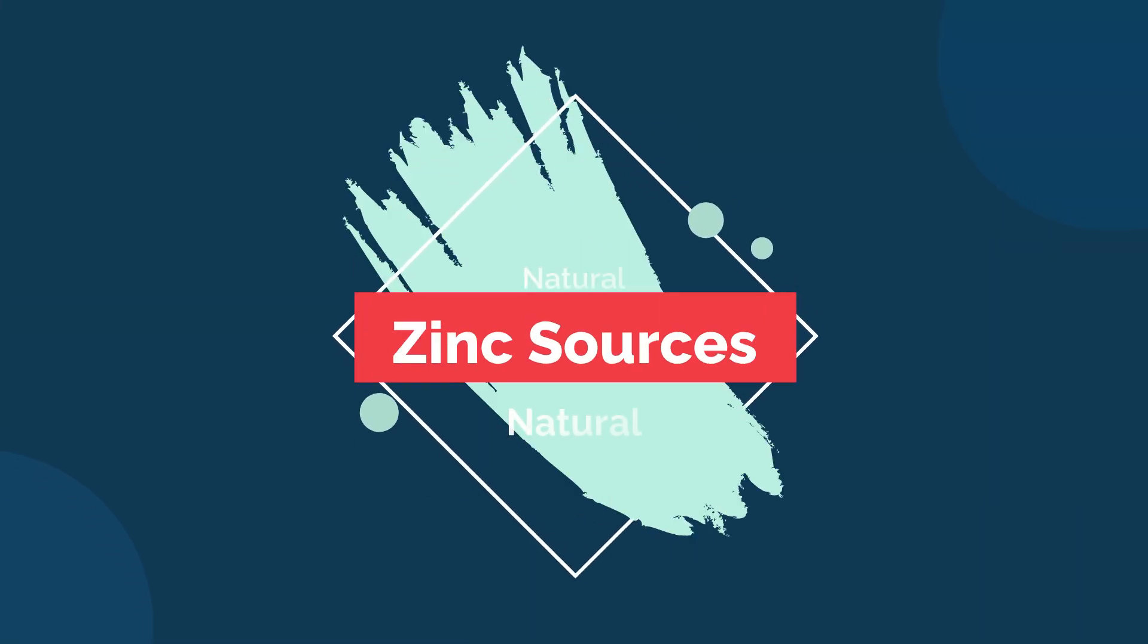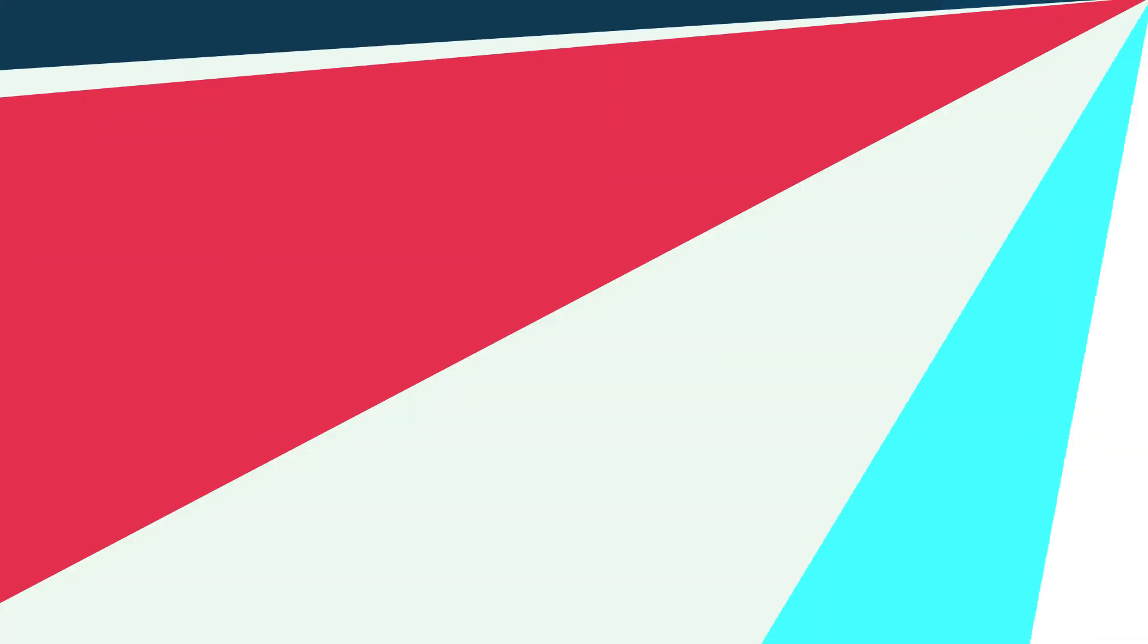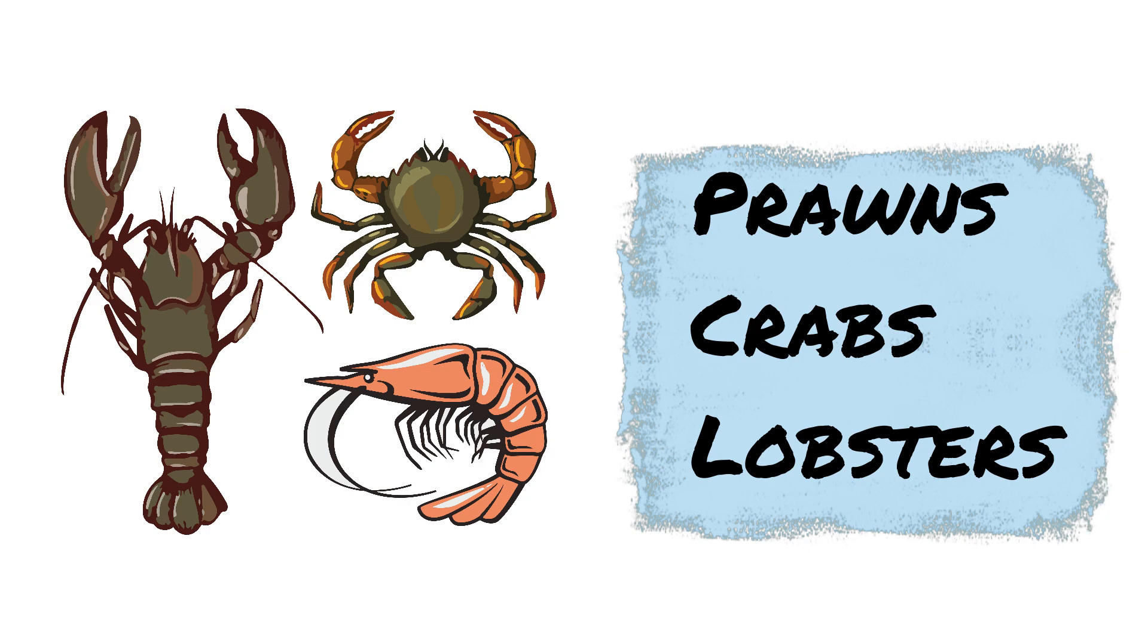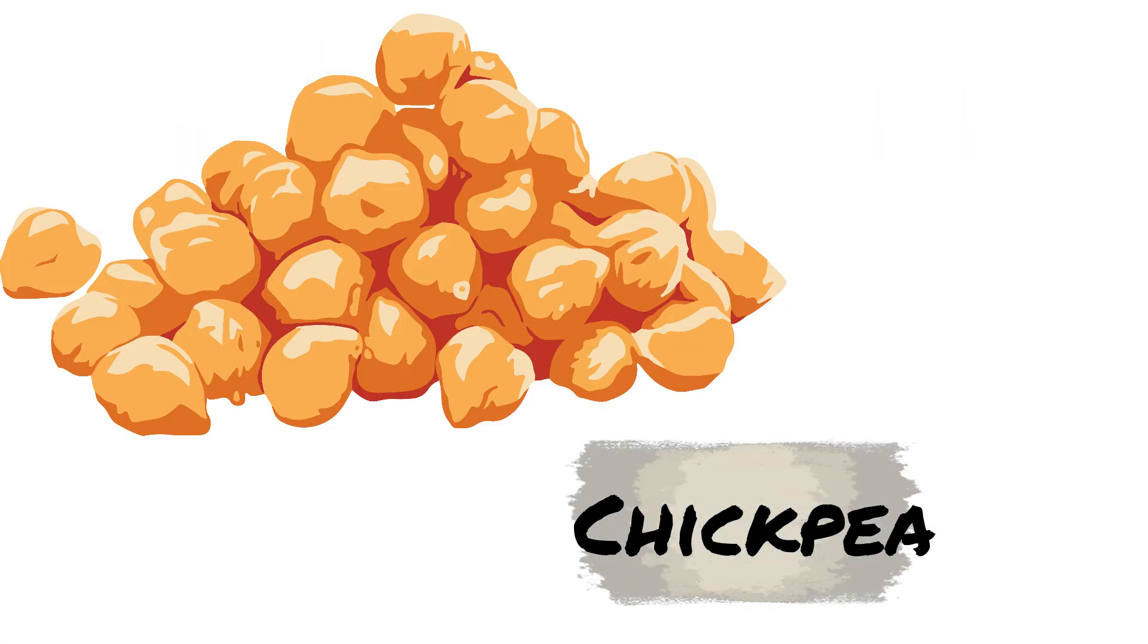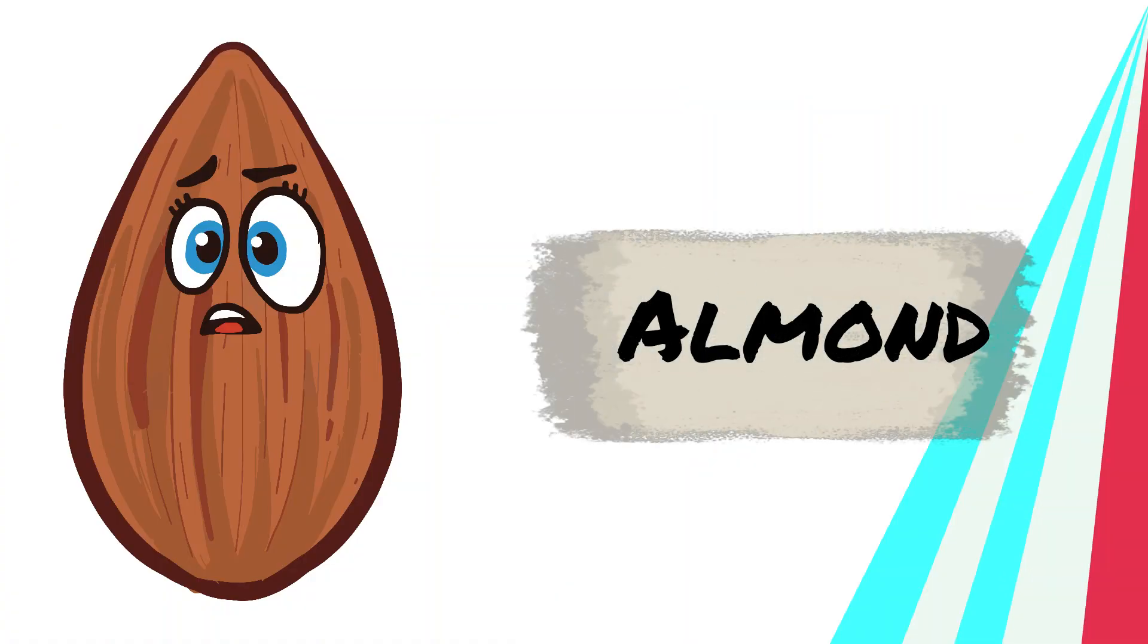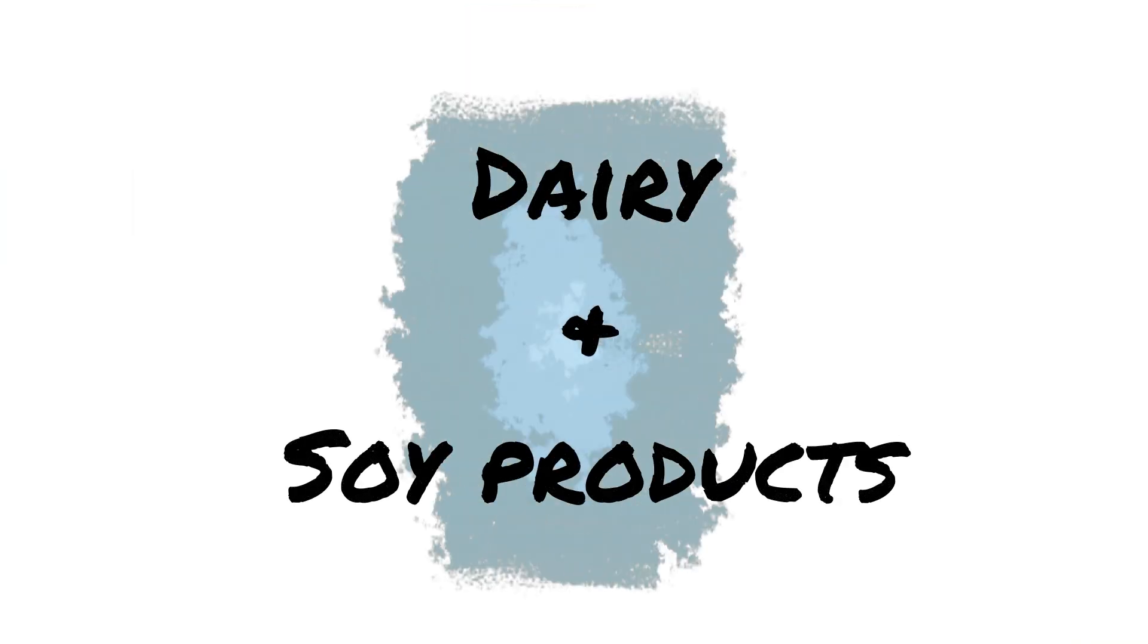A few natural sources of zinc include seafood such as prawns, crabs and lobster, oysters, red meat and poultry, pumpkin seeds, chickpeas, cashews, almonds, egg yolk, and dairy and soy products.